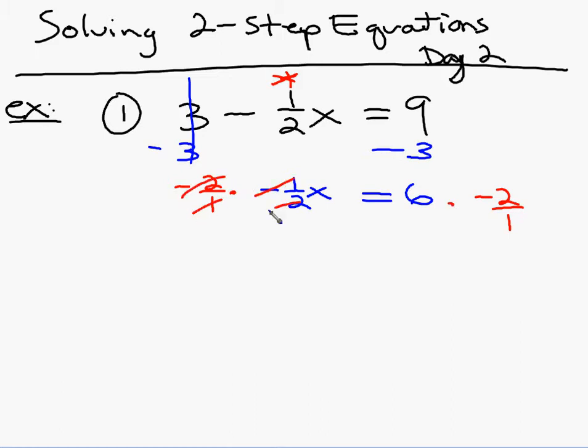On the left side everything goes away, and I have an x. On the right side I need to put six over one, and there's nothing I need to factor, so I just multiply across and I have negative twelve. So that's a little like the ones we've been doing.